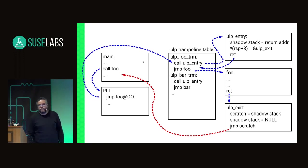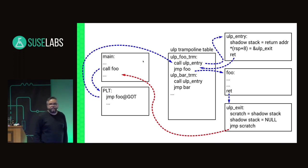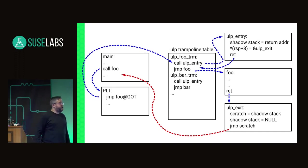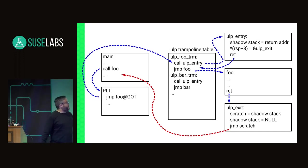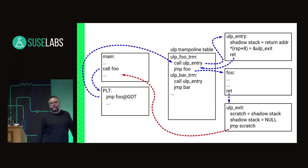Question: how do you redirect foo to actually go to ULP exit? At ULP entry, we change the return address of the function. So whenever this function returns, it goes to ULP exit — that's the trick.